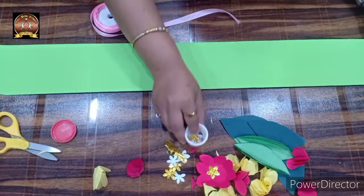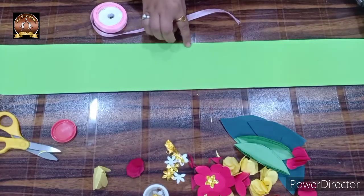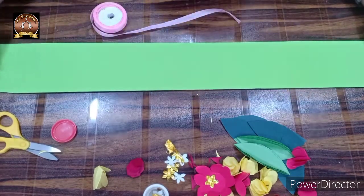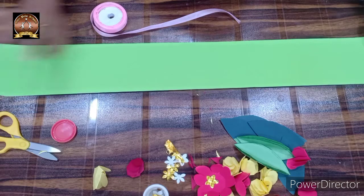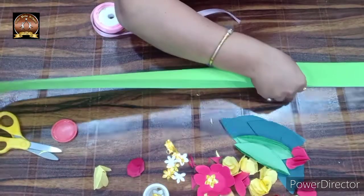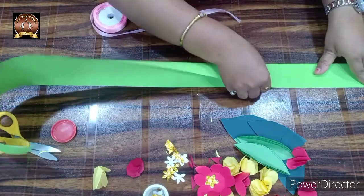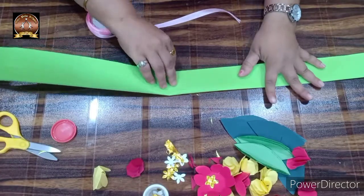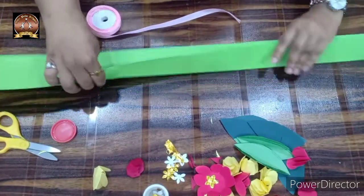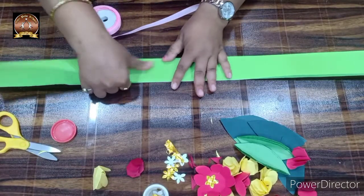After this, children, take a strip approximately 10 centimeters wide and door length long. First, fold it like this. When we fold it, we get a double layer, and that increases the strength of the toran.